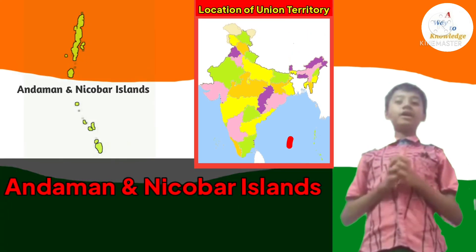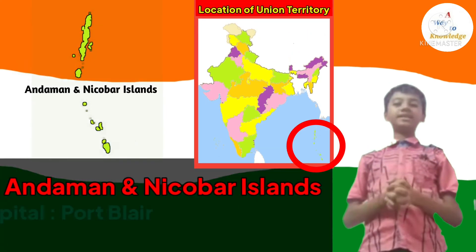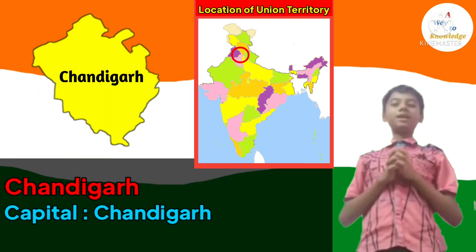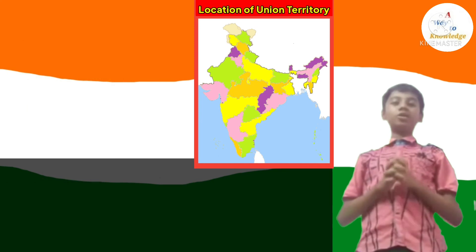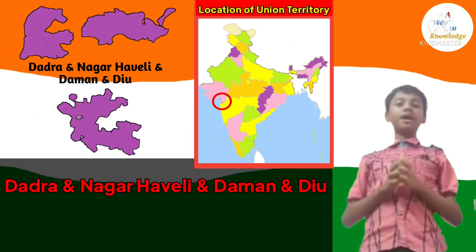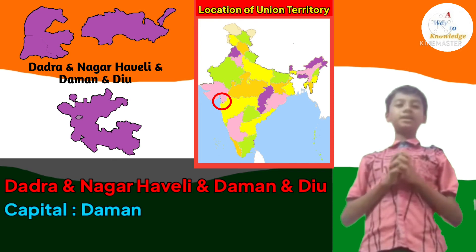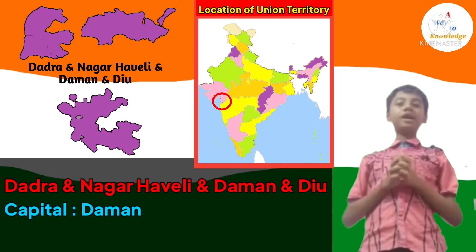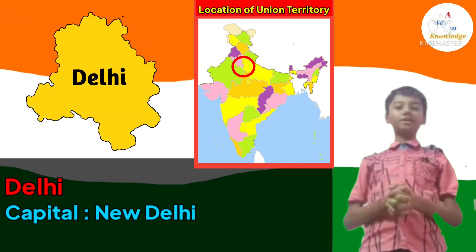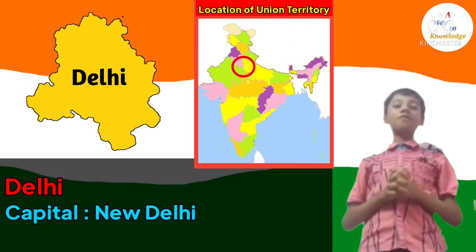UT number 1: Andaman and Nicobar Islands. Its capital is Port Blair. UT number 2: Chandigarh. Its capital is also Chandigarh. UT number 3: Dadra and Nagar Haveli and Daman and Diu. Its capital is Daman. Daman and Diu and Dadra and Nagar Haveli were separate Union Territories until 2019 when they were merged together. UT number 4: Delhi. Its capital is New Delhi. It is the capital city of India.